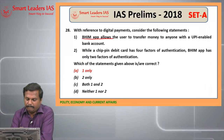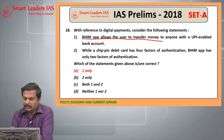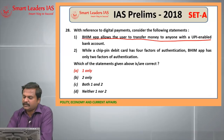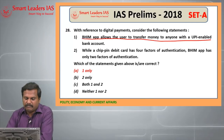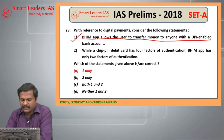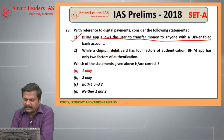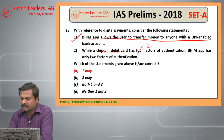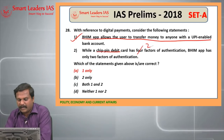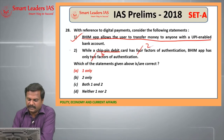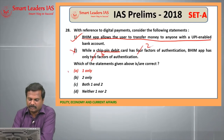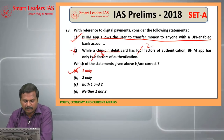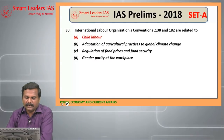28th question: the BHIM app allows the user to transfer money to anyone with a UPI-enabled bank account — this is a right statement. While a chip-in debit card has two factors of authentication, the BHIM app has three factors of authentication — so this is a wrong statement. Hence the answer is 1 only.